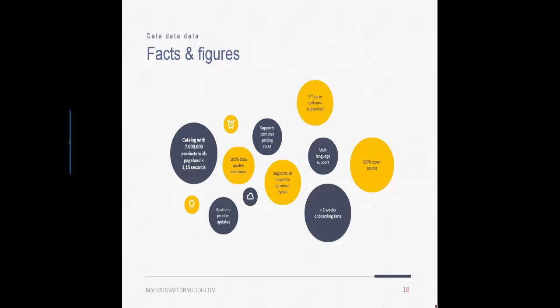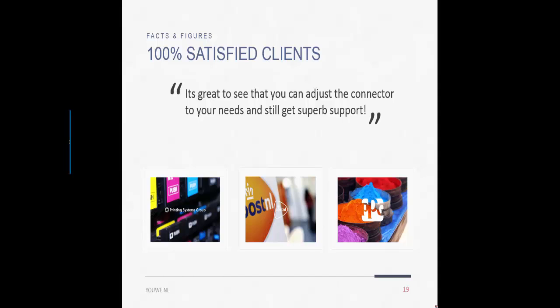You can set up the Magento SAP connector for third-party modules as well — for example, a product information management system or connecting SAP data with a CRM system. The module supports multi-language and is 100% open source, so you can review and extend the code yourself. For default Magento mapping the onboarding time is 2 weeks; depending on the complexity of your SAP environment, additional time may be needed for custom mapping. There are already tens of clients running on this module, including some worldwide players.